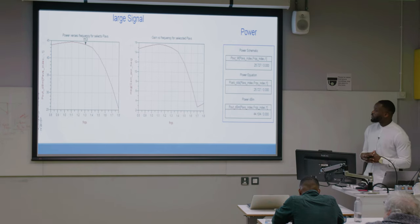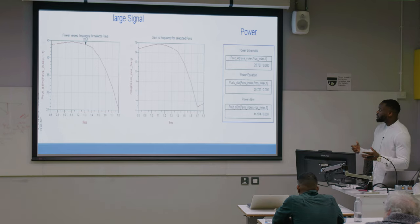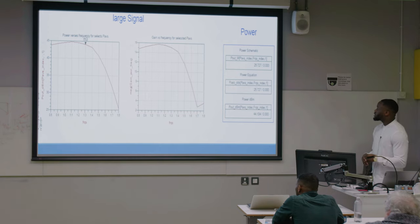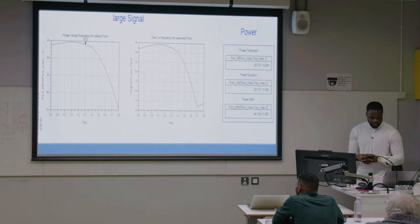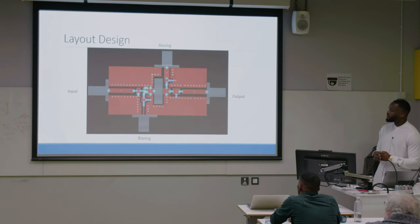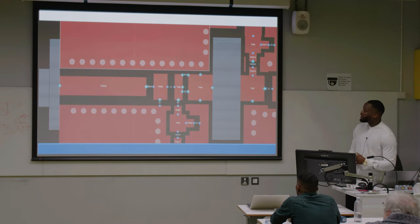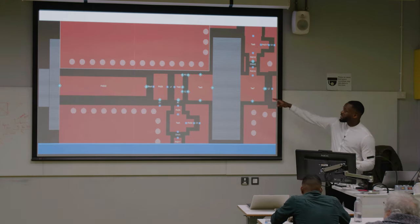The large signal simulation confirms the amplifier works fine — I achieved an output of 25 watts, meeting the design goals. This here is the layout I'm working on in ADS. It shows the input and output of the device and the bias network. This zoomed-in view shows where the device will sit, and here is the stability network.